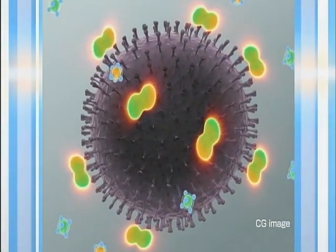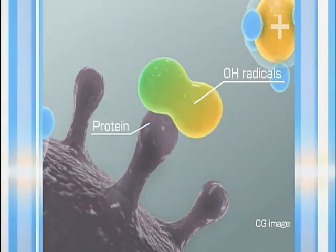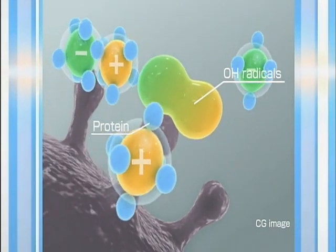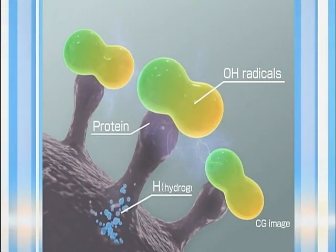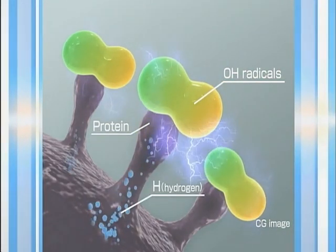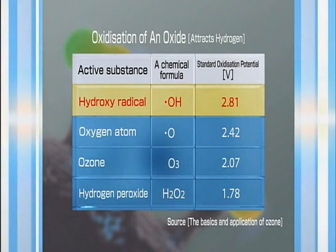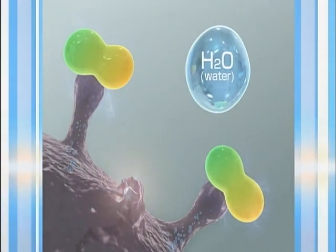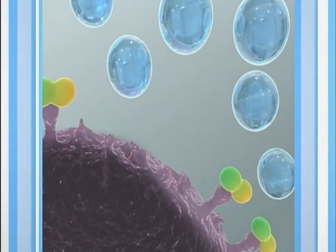When two ions stick to the surface of a virus, they transform into a highly oxidizing OH radical and draw out the hydrogen from the protein of the spike-shaped virus. OH radicals exert the strongest attractive force on hydrogen out of all the oxides. Protein from which hydrogen has been taken is degraded and the OH radical returns to water.